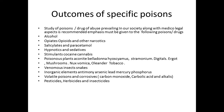They want us to emphasize the following poisons in special toxicology: 1. Alcohol; 2. Opiates, opioids and other narcotics; 3. Salicylates and paracetamol; 4. Hypnotics and sedatives; 5. Stimulants, cocaine and cannabis; 6. Poisonous plants — aconite, belladonna, hyoscyamus, stramonium, digitalis, ergot, mushrooms, nux vomica, oleander, tobacco; 7. Venomous insects and snakes; 8. Inorganic elements like antimony, arsenic, lead, mercury and phosphorus; 9. Volatile poisons like corrosives, carbon monoxide, carbonic acid and alkalis; 10. Pesticides, herbicides and insecticides.